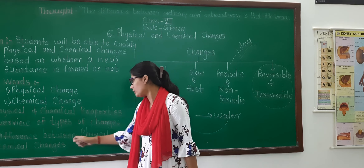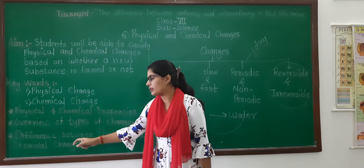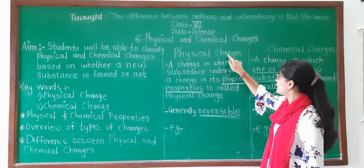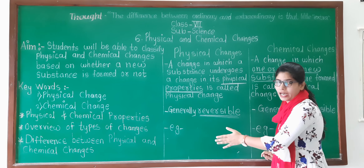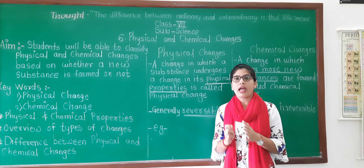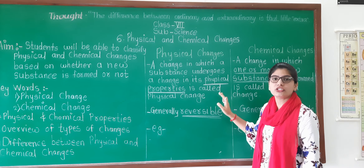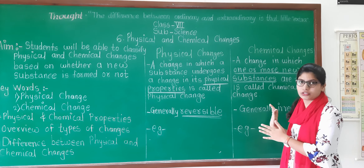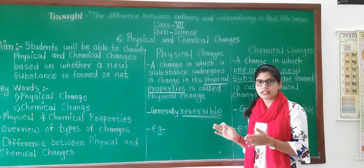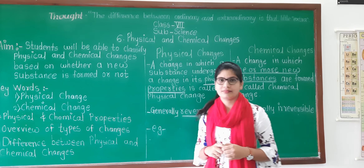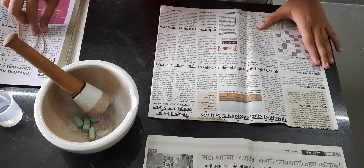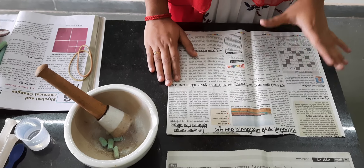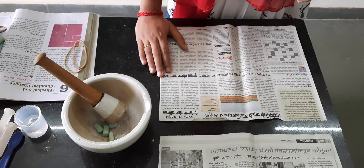The reversible and irreversible changes are the main changes we need to learn, and according to that we will now learn the difference between physical and chemical changes. In your textbook there are activities 6.1, 6.2, 6.3, and 6.4, but now we will do only two activities — 6.1 and 6.2.